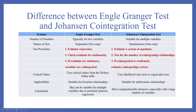The difference between the Engle-Granger test and the Johansen co-integration test: in terms of number of variables, Engle-Granger is typically used for two variables, while Johansen is suitable for multiple variables. Nature of test — Engle-Granger is sequential; Johansen is simultaneous. Test procedure for Engle-Granger: estimate the regression, then check the residuals for stationarity; if residuals are stationary, variables are co-integrated. For Johansen: estimate a system of equations, test for the number of co-integrating relationships, and if co-integration is confirmed, estimate the co-integrating vectors.